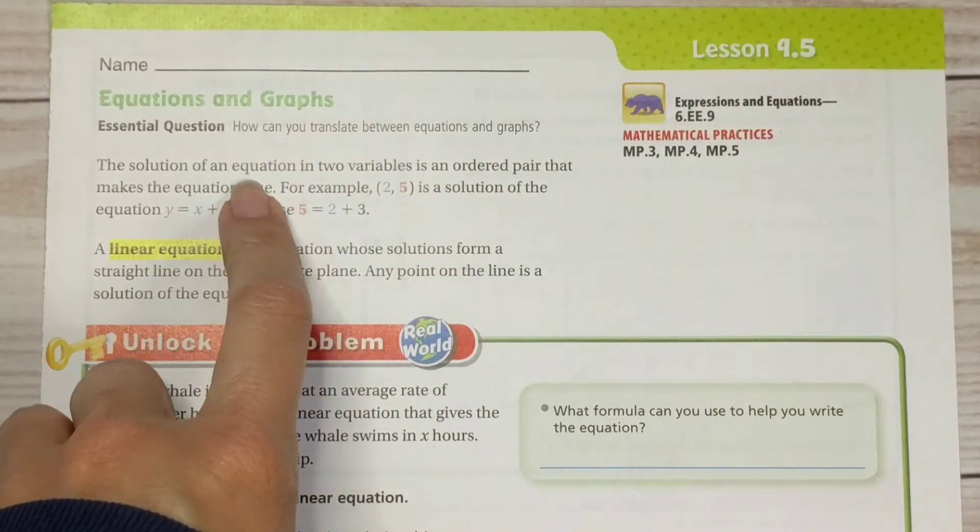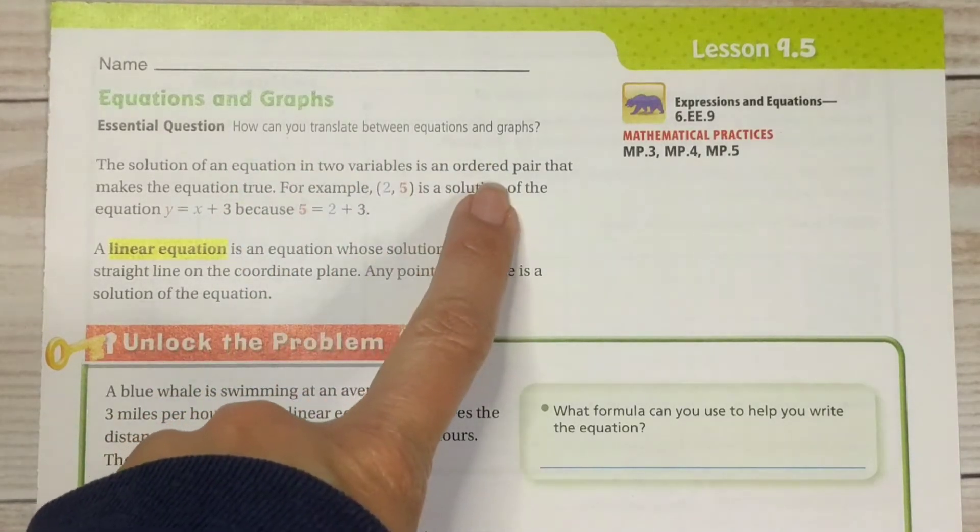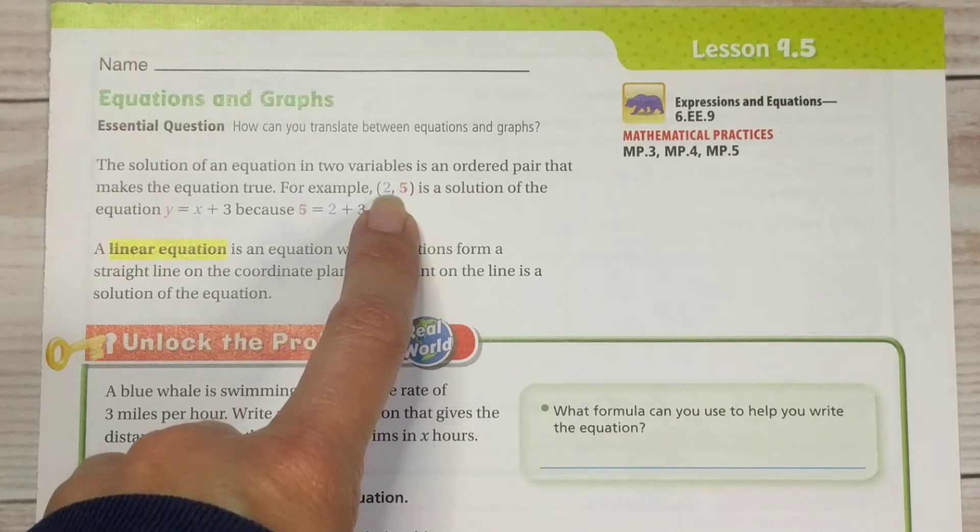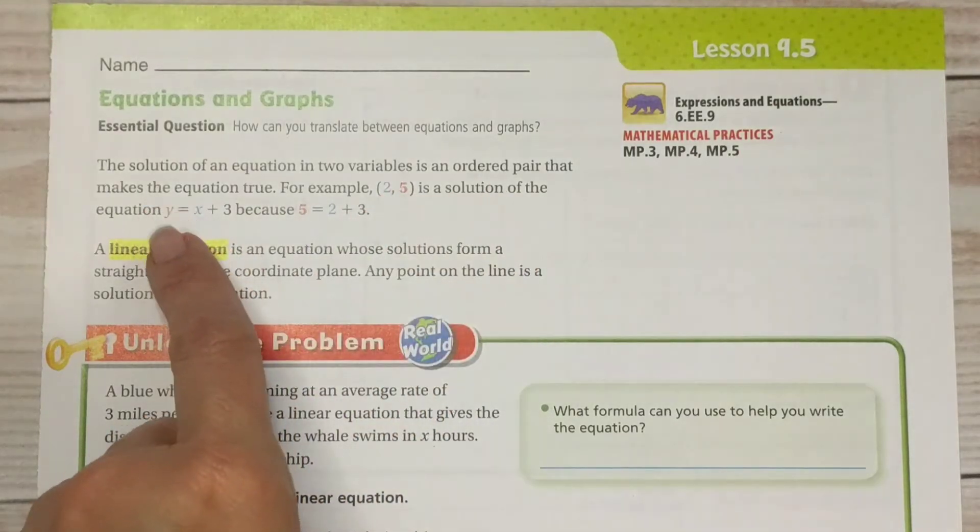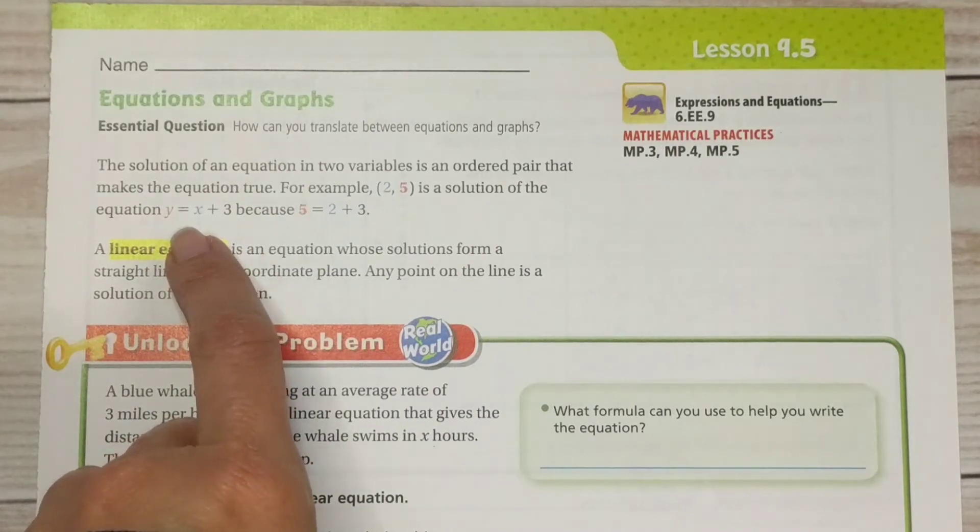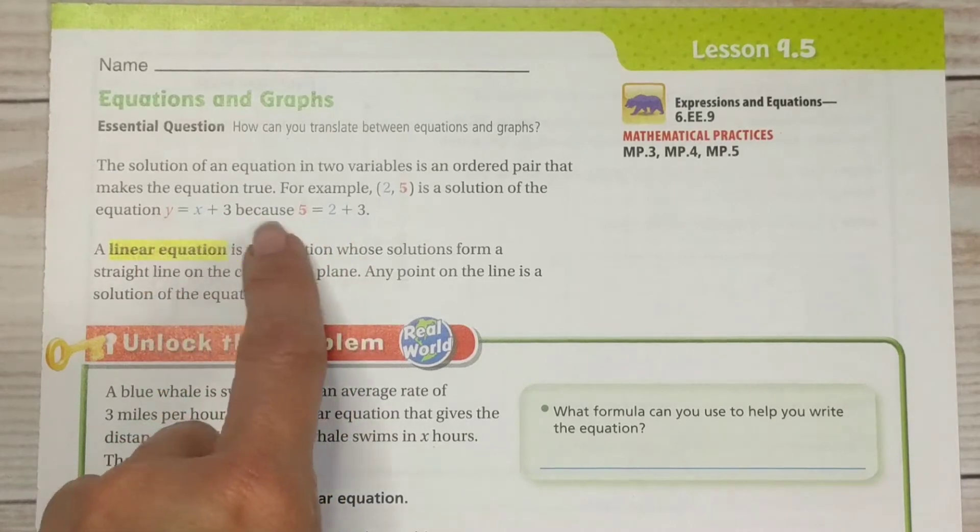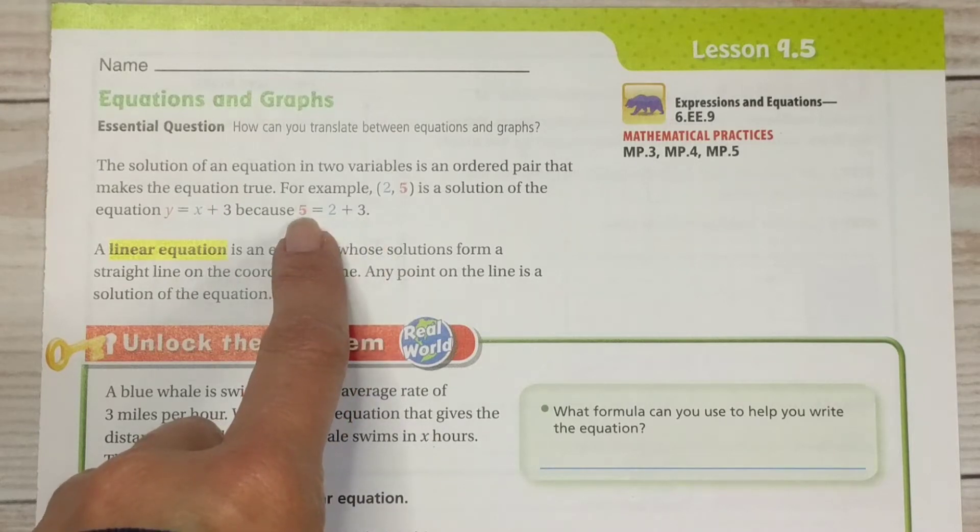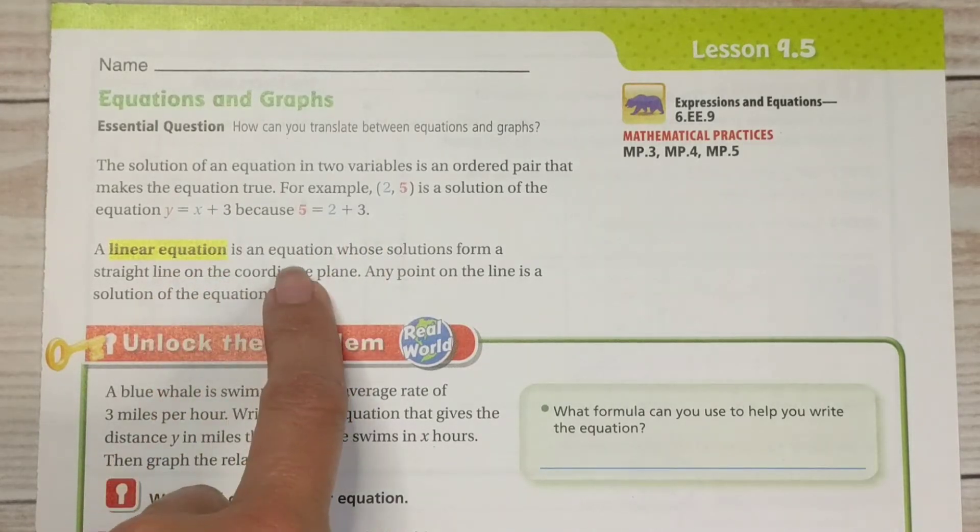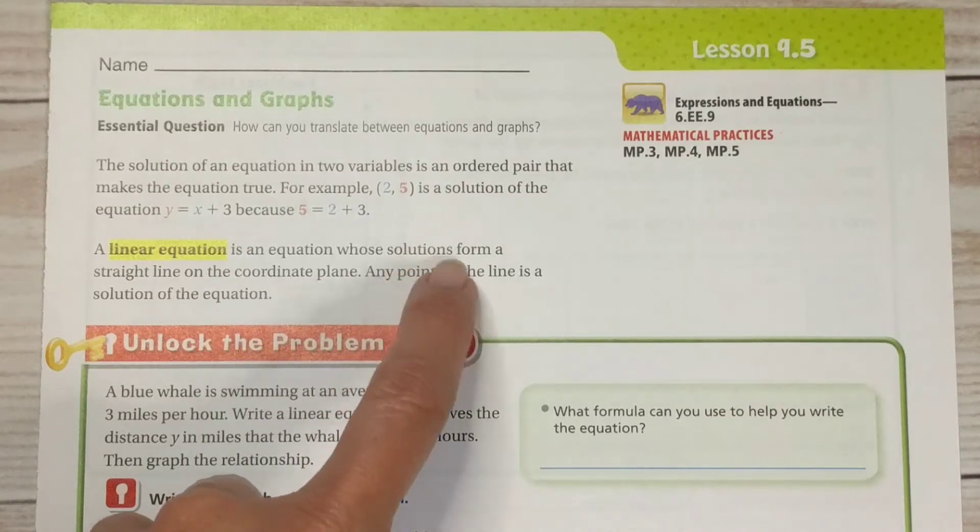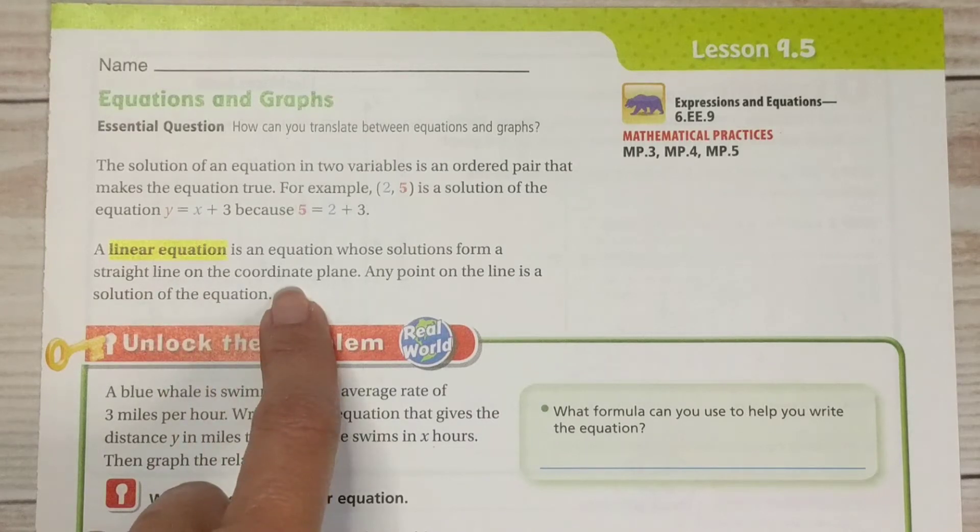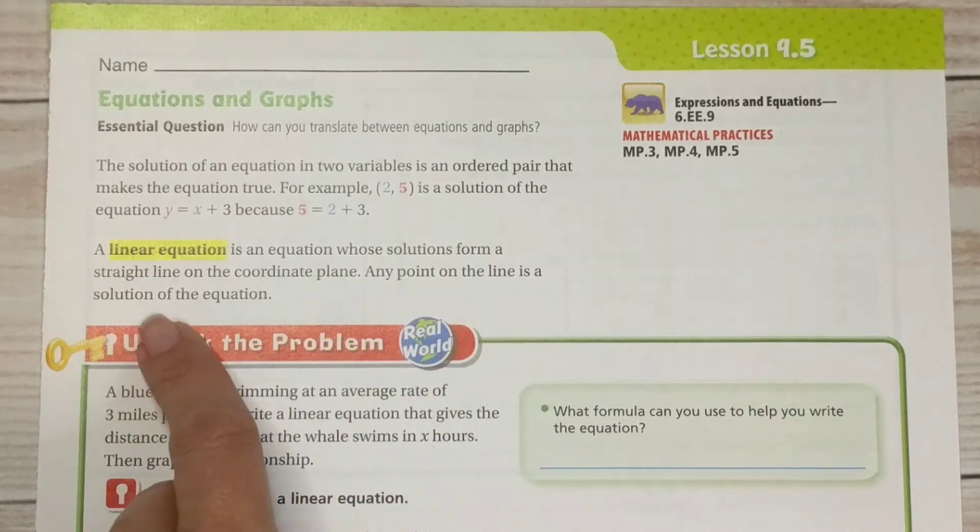The solution of an equation in two variables is an ordered pair that makes the equation true. For example, this ordered pair (2, 5) is a solution of the equation y equals x plus 3 because when y equals 5 and x equals 2, this equation is true because 2 plus 3 is 5. A linear equation is an equation whose solutions, notice that's plural, that means there's more than one. It has many solutions. Form a straight line on the coordinate plane. Any point on that line is a solution to the equation.